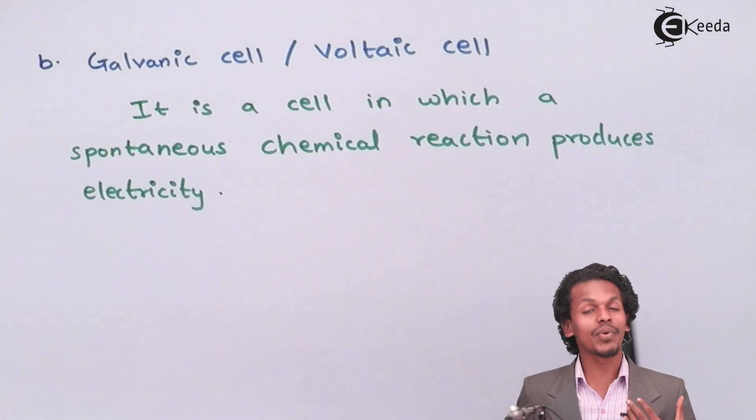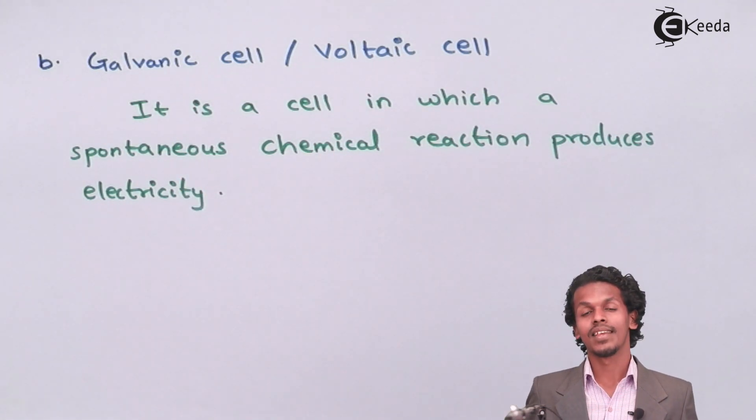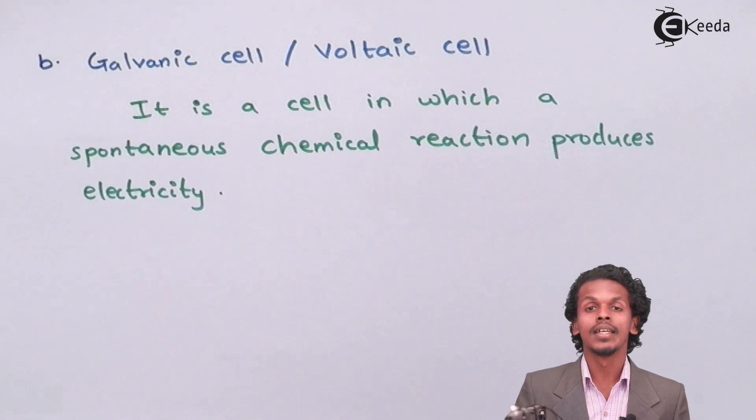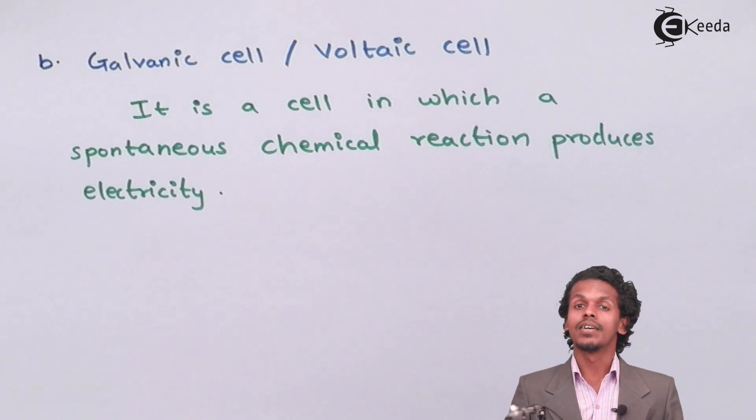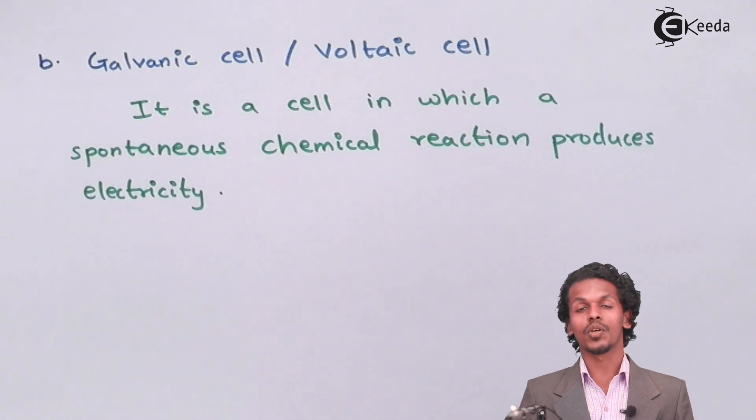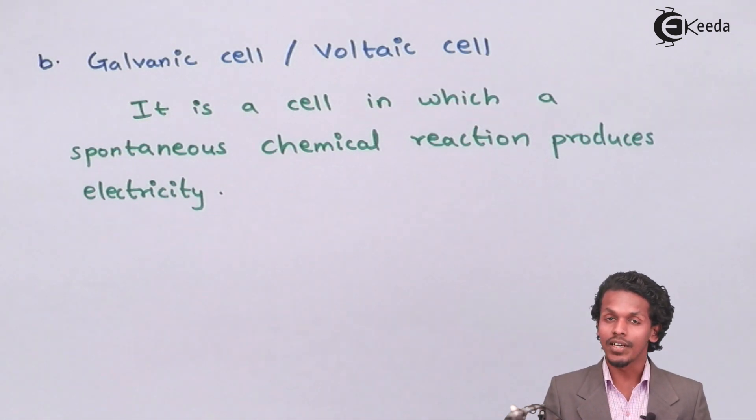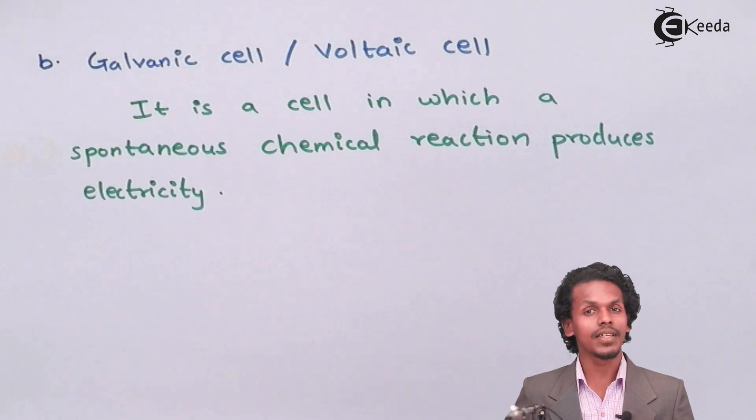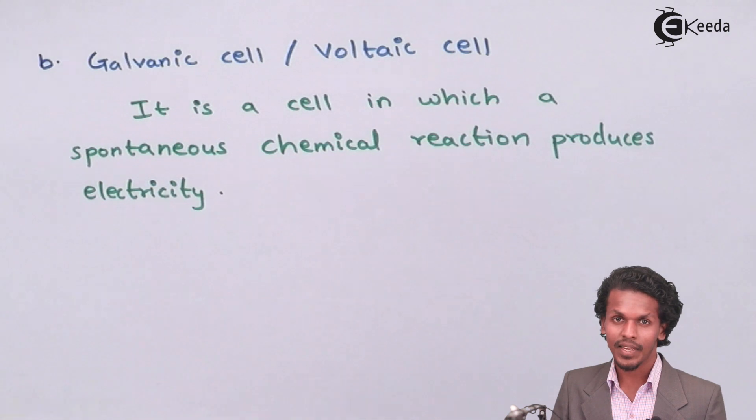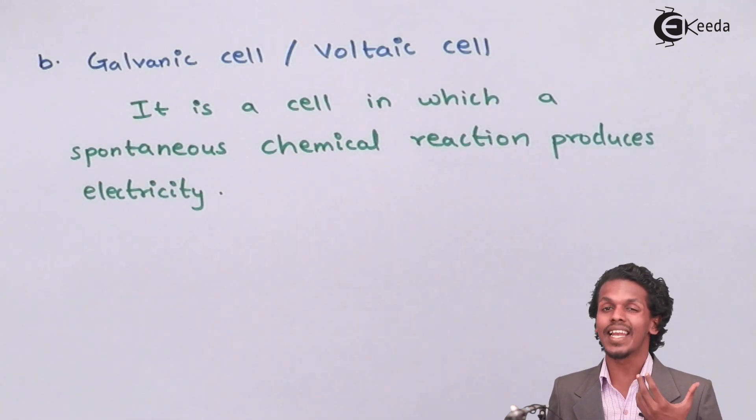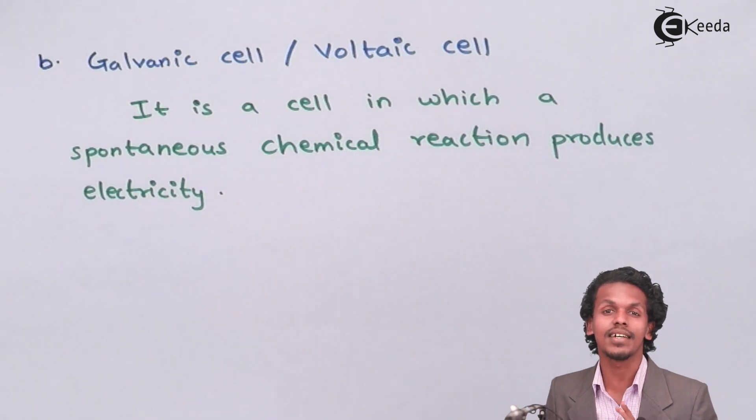So it says that it is a cell in which a spontaneous chemical reaction will produce electricity. So the reaction has occurred because of the involvement of the two chemicals or being involved with the chemicals with the electrodes that are being dipped in the electrolytes. Because of which chemical reaction occurs and the flow of electricity takes place through the electrodes and hence we could generate the electricity. So this kind of cell in which chemical energy is converted into electrical energy are said to be the galvanic cells.